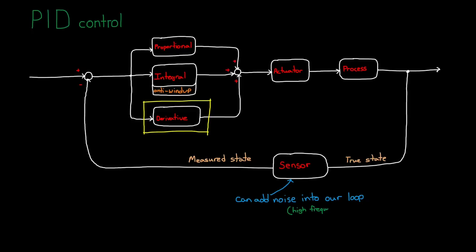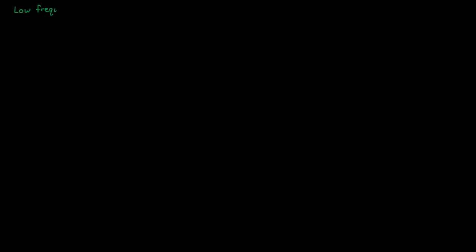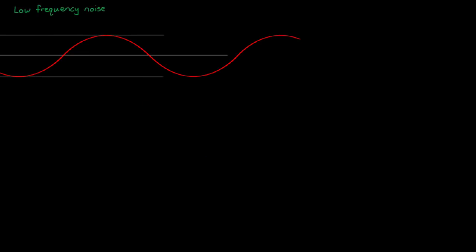Derivatives amplify high frequency signals and can take those tiny, barely noticeable wiggles and amplify them to values that can impact our system. Let's see if we can figure out why that is. Let's look at a low frequency noise signal, just a pure sine wave.